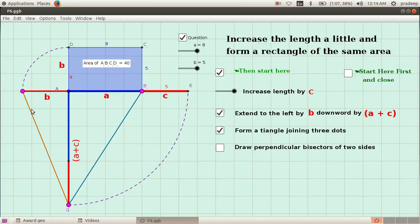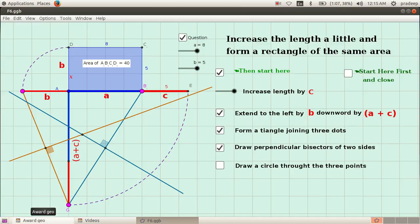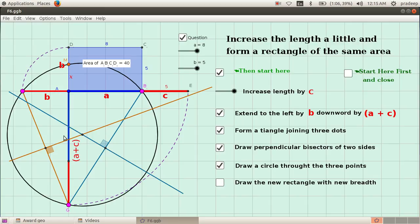Then we have to join these three points to form a triangle and draw perpendicular bisectors of these two sides to meet at a point to get the center of the proposed circle. We have to draw a circle that can pass through all these three points. The center is the meeting point of the perpendicular bisectors. Let us draw a circle with this point as center and passing through any of these three points.